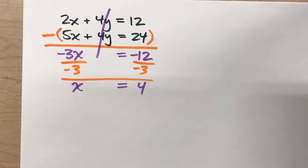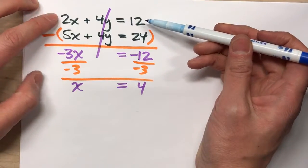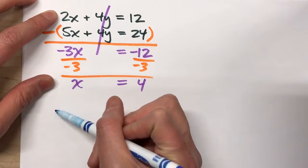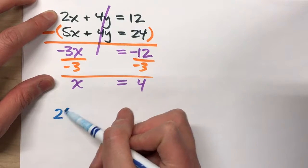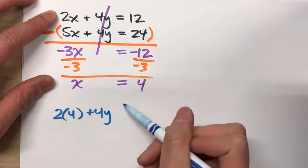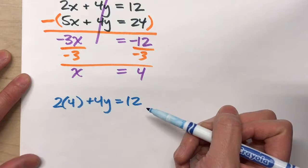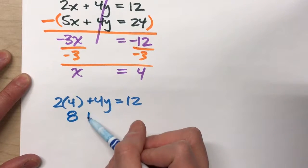And now, just like yesterday, to figure out what y is, we're going to take our x value and put it back into one of our original equations. In this case, I'm going to put in the first one. 2 times our x value, which is 4, plus 4y, equals 12. So if we solve this, we'll figure out what our y value is.